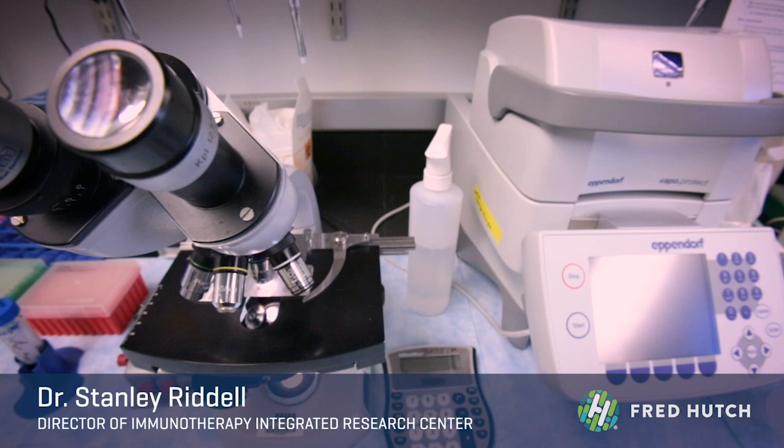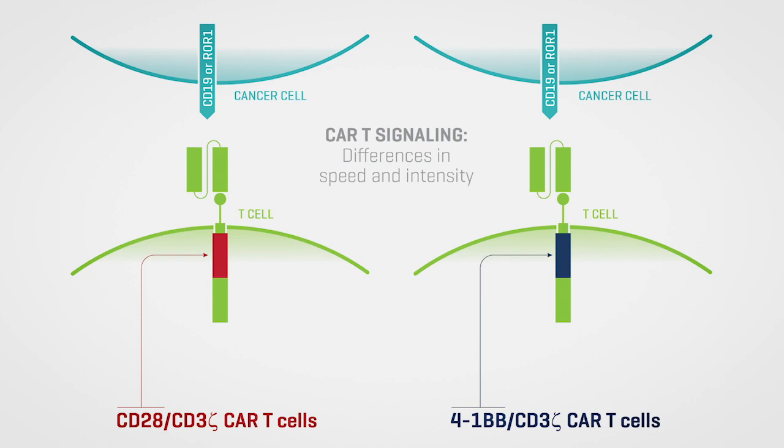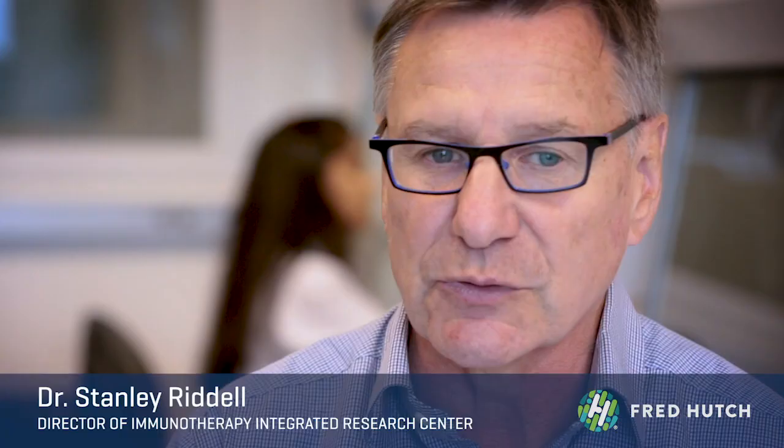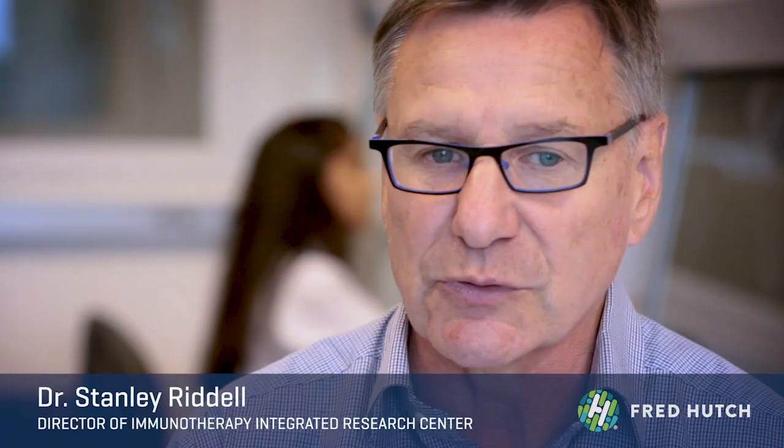One of the major findings of this paper was that different receptors can signal with very different strength and with different kinetics. When we took those cells with those receptors and put them into animal tumor models, the cells behaved differently. Some receptors would confer more rapid cell division and also more susceptibility to losing their ability to function — to sustain function against a growing tumor.